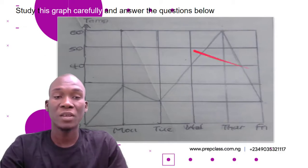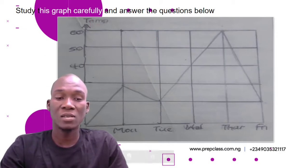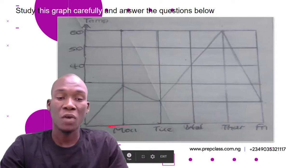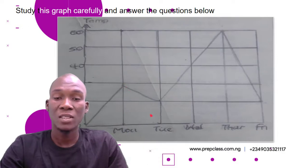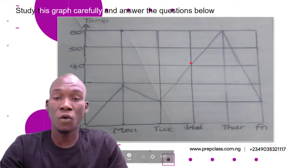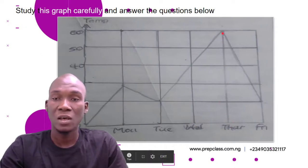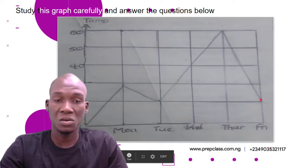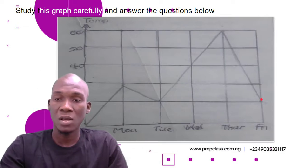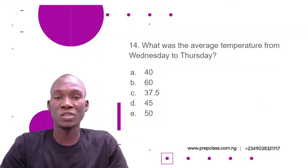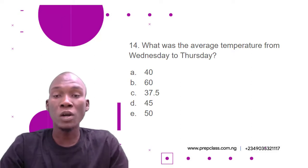We have this graph showing temperature against days of the week. Sunday has a temperature of 10, Monday a temperature of 30, Tuesday a temperature of 20, Wednesday a temperature of 40, Thursday a temperature of 60, and Friday a temperature of approximately 20.